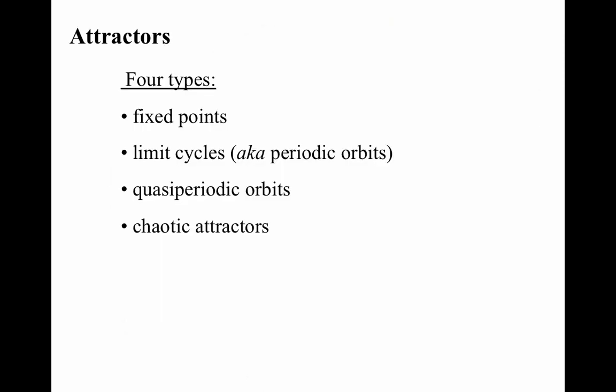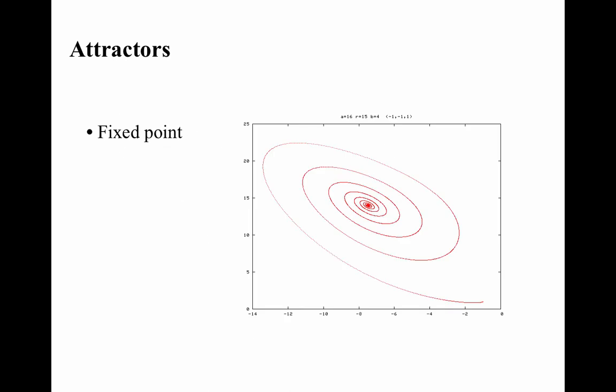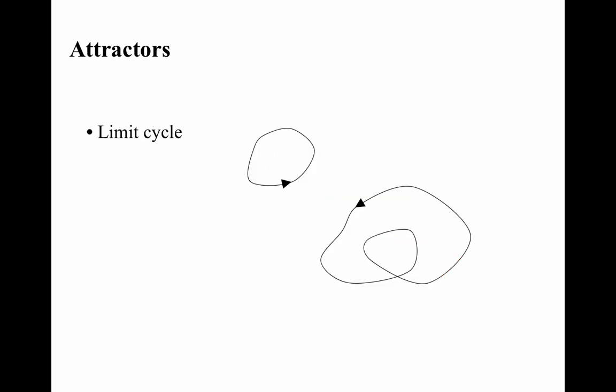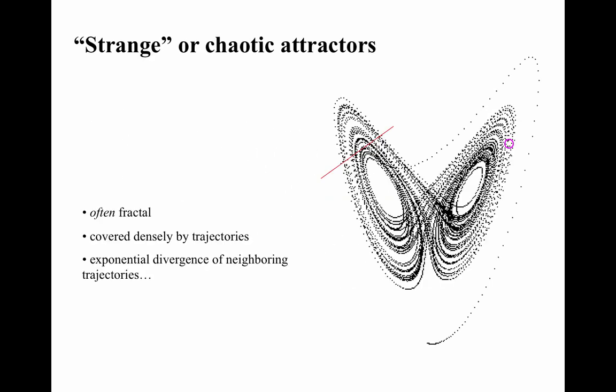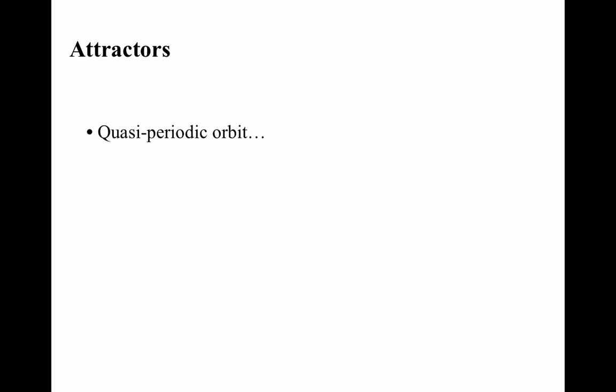There are four kinds of attractors that turn up in dissipative nonlinear dynamical systems, and you've seen three of them today: fixed points, periodic orbits or limit cycles, and chaotic attractors. The fourth type — quasi-periodic orbits — I'm not going to talk about very much in this course, but do be aware that there is a fourth type.